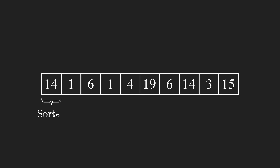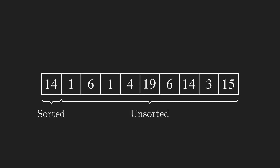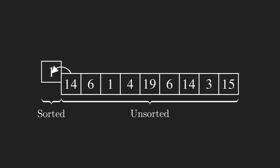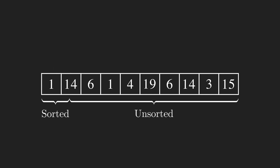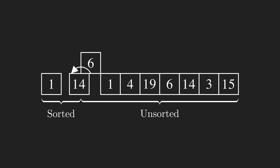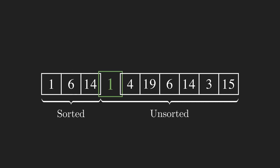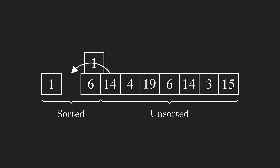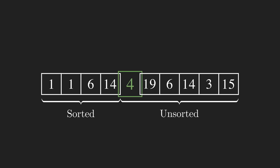The same idea can be applied to an array of numbers. We virtually divide the array into two sections: sorted and unsorted. Every time we pick the first value of the unsorted section and insert it at the correct position in the sorted part — that's why we call it insertion sort. If the position of the value is occupied by another value, we have to shift some values to the right and make space for the new element.